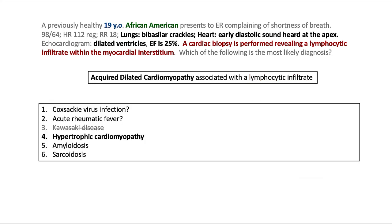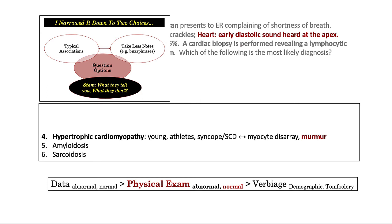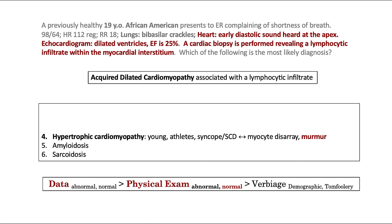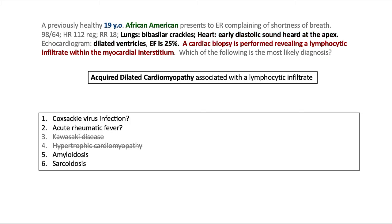Let's strike Kawasaki from the list and move on to hypertrophic cardiomyopathy. The typical descriptors include young athletes presenting with syncope or sudden cardiac death, associated with the pathologic finding of myocyte disarray. Focusing on what they didn't tell us: no systolic murmur at the mid-left sternal border louder with standing and Valsalva maneuver, and the echo did not report hypertrophic changes. Plus, the biopsy demonstrated a lymphocytic infiltrate, not myocyte disarray, so this is an easy answer to exclude. As for amyloid, the pathogenesis involves abnormal folding of a protein deposited in the interstitium. Cardiac amyloid is one of the prototypic restrictive cardiomyopathies, so we can strike that one from the list as well.